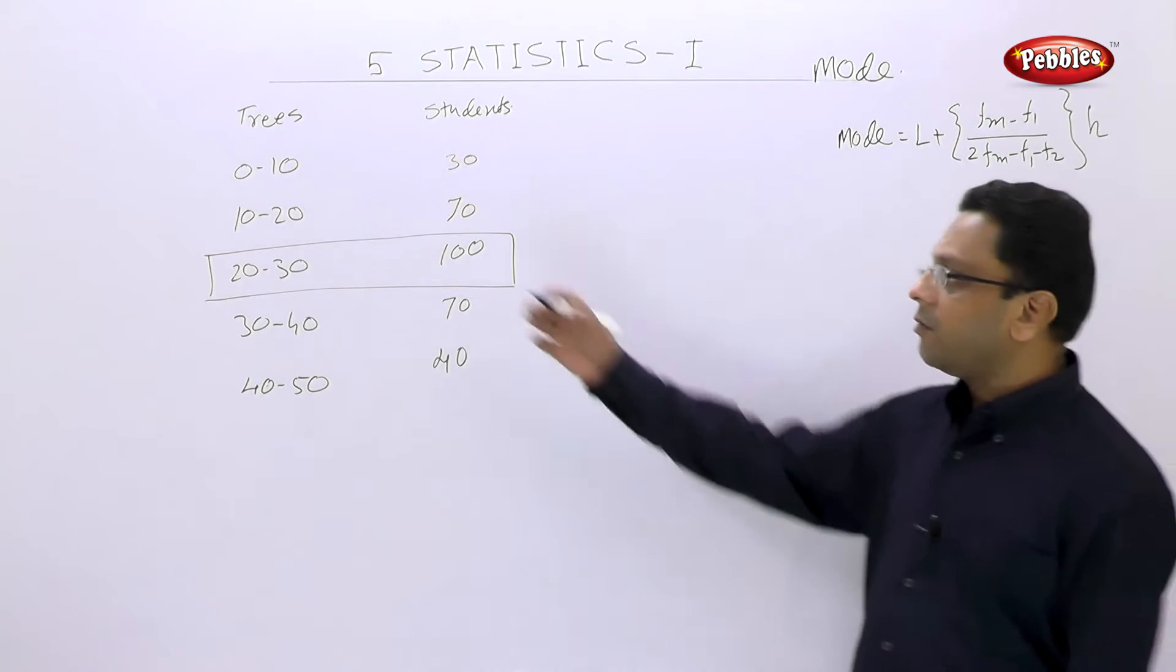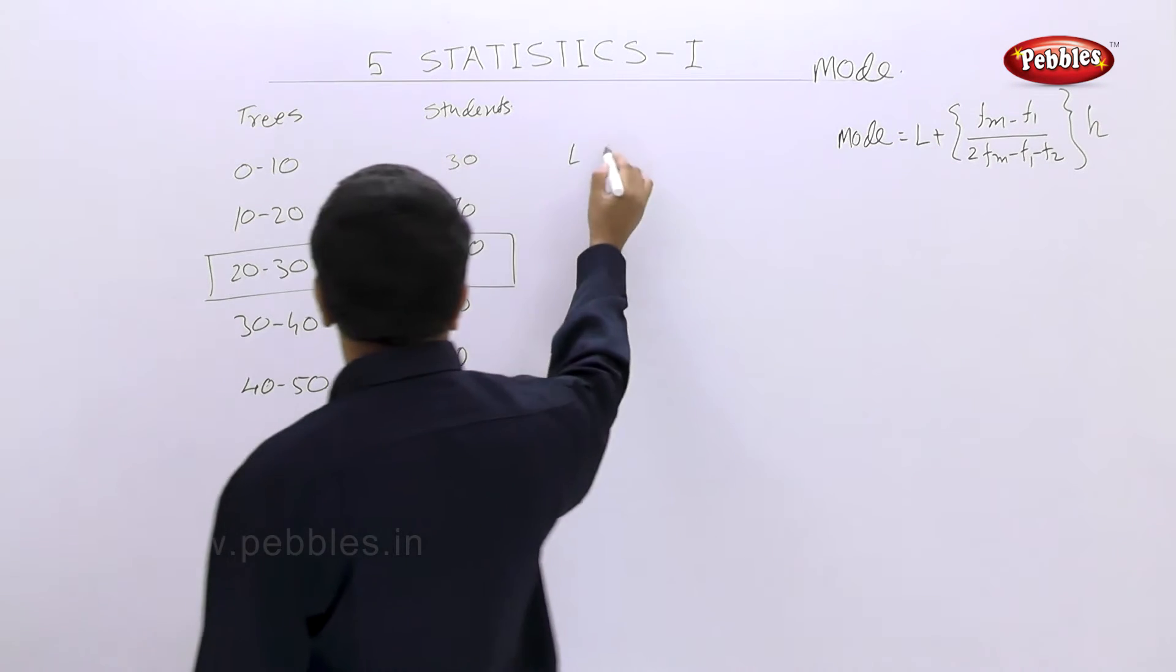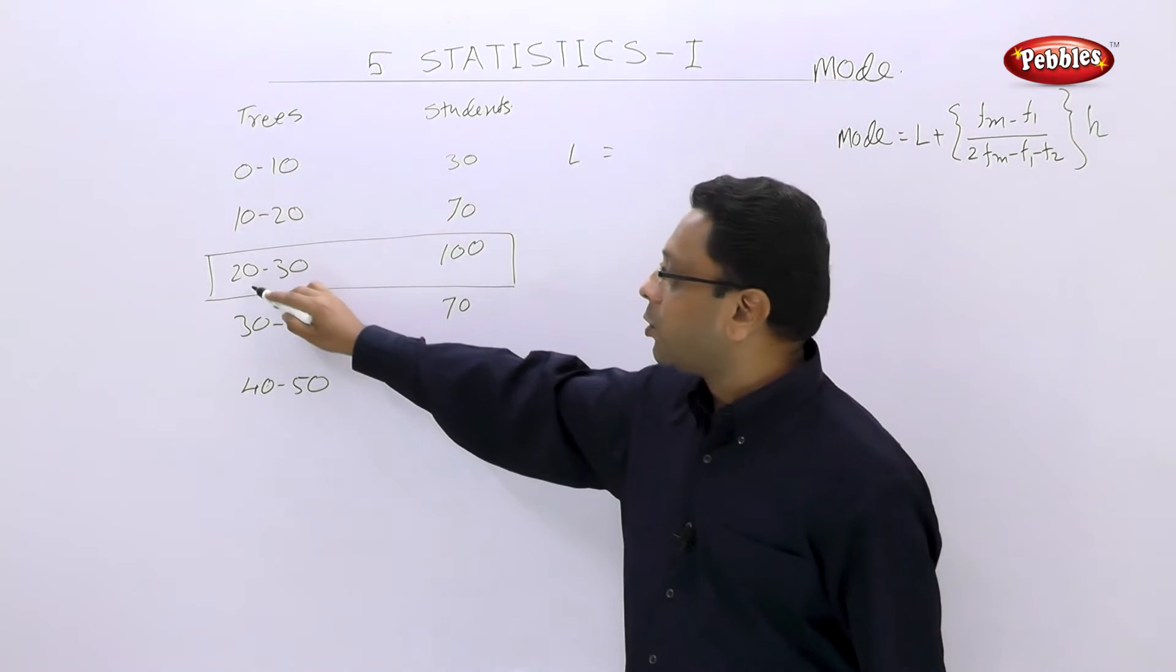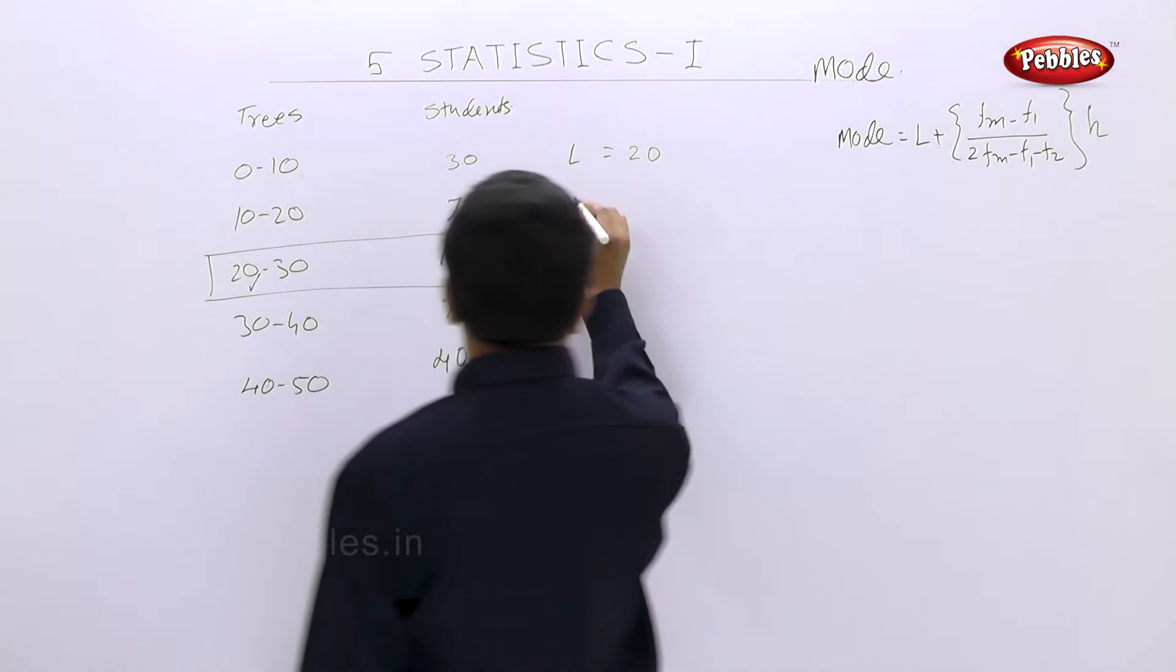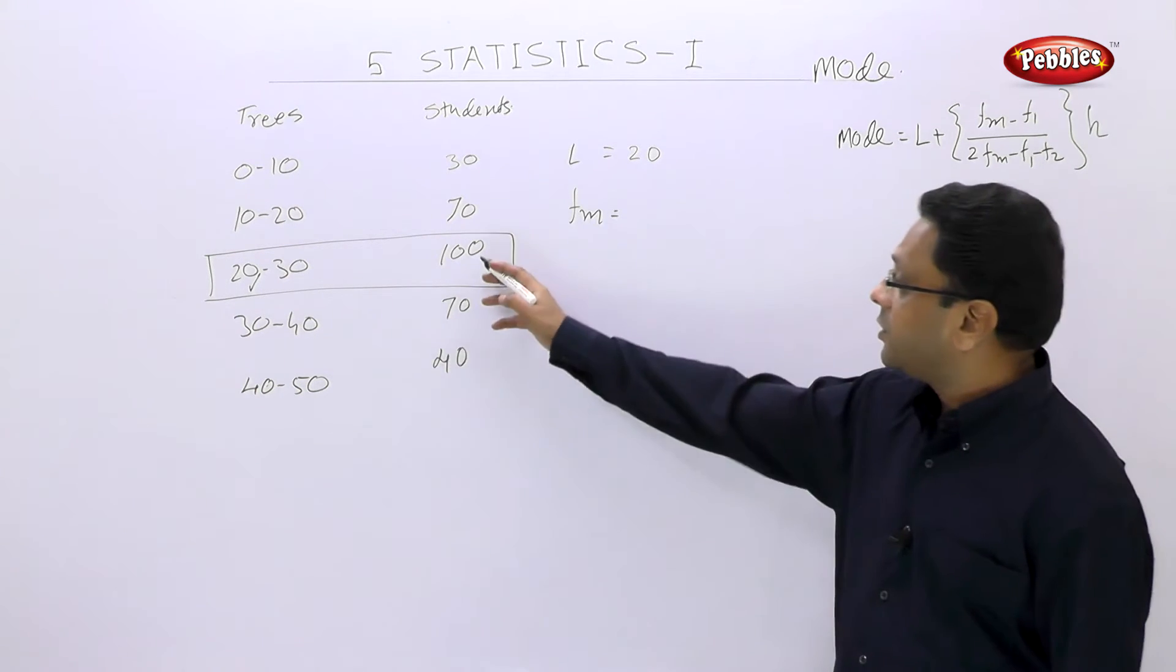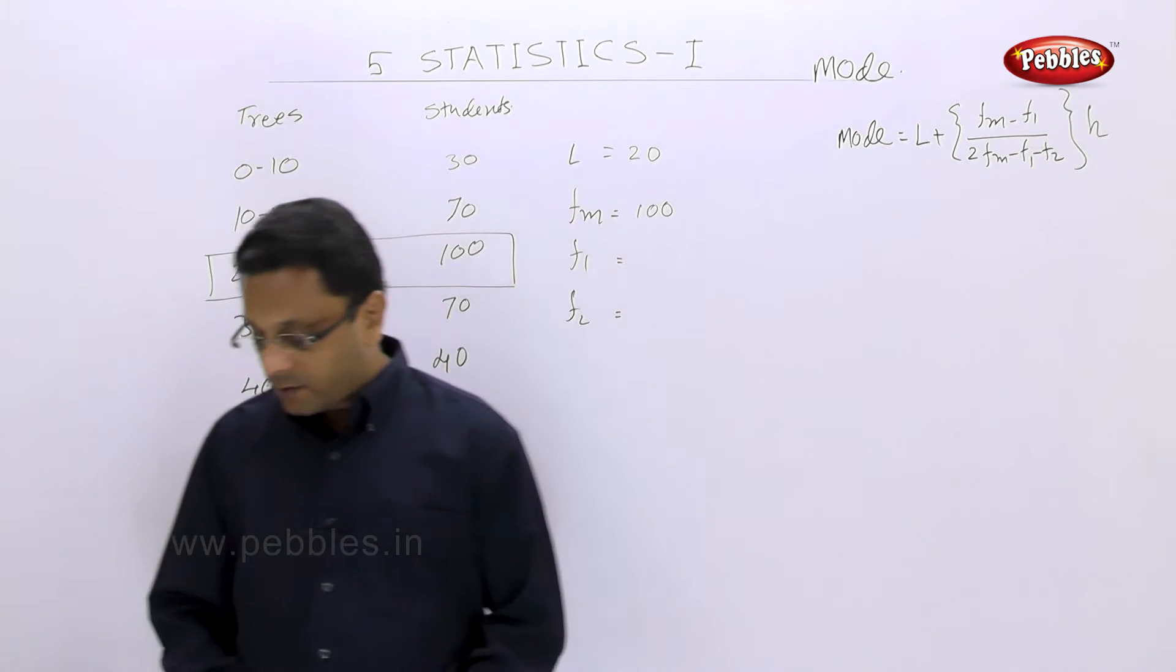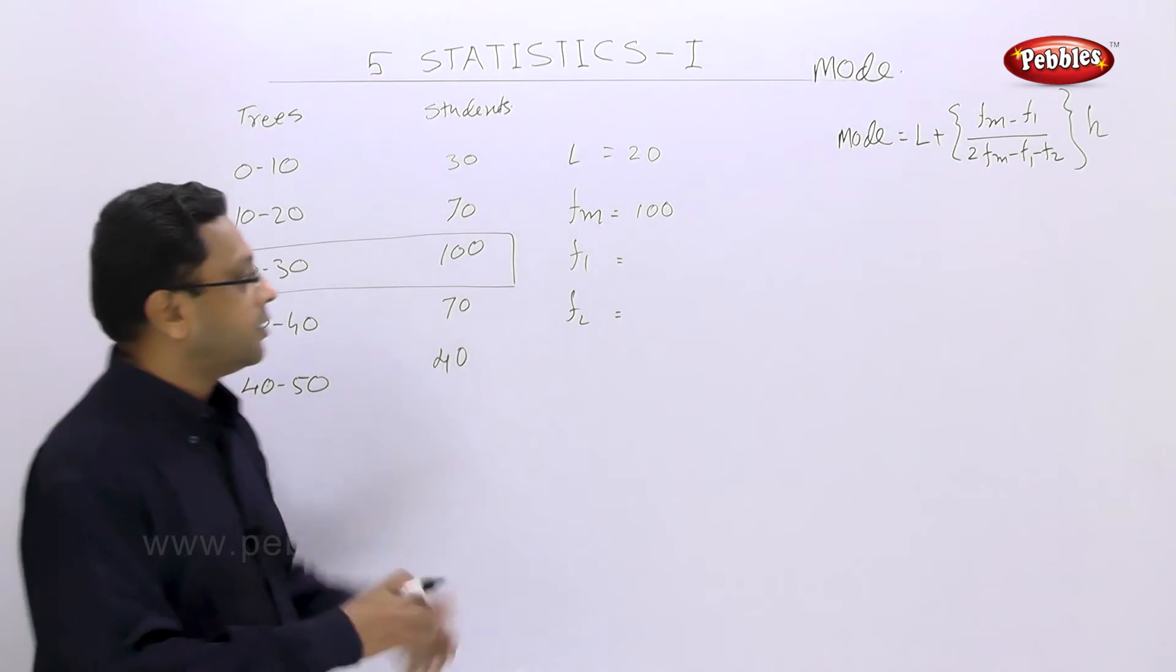And now we will just substitute the values. What are the values we want? We want L, that is the lower limit of the modal class. So this is the lower limit of the modal class, 20. Then we want FM. FM is the frequency related to modal class. That means this is FM. Now F1 and F2. F1 is the frequency of the pre-modal class, that means just above. Here in this case, it is 70.